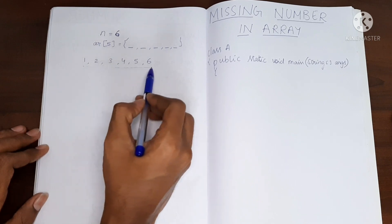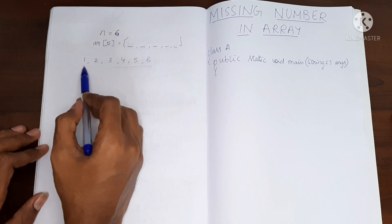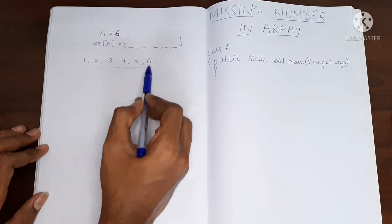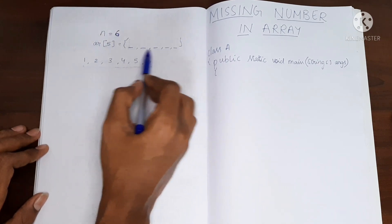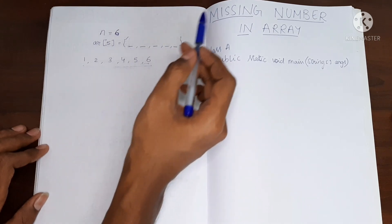From this 6 values, any 5 will be present over here. Let me repeat: from this 6 values, any 5 will be present over here, and the one which is missing is the number which we have to find.